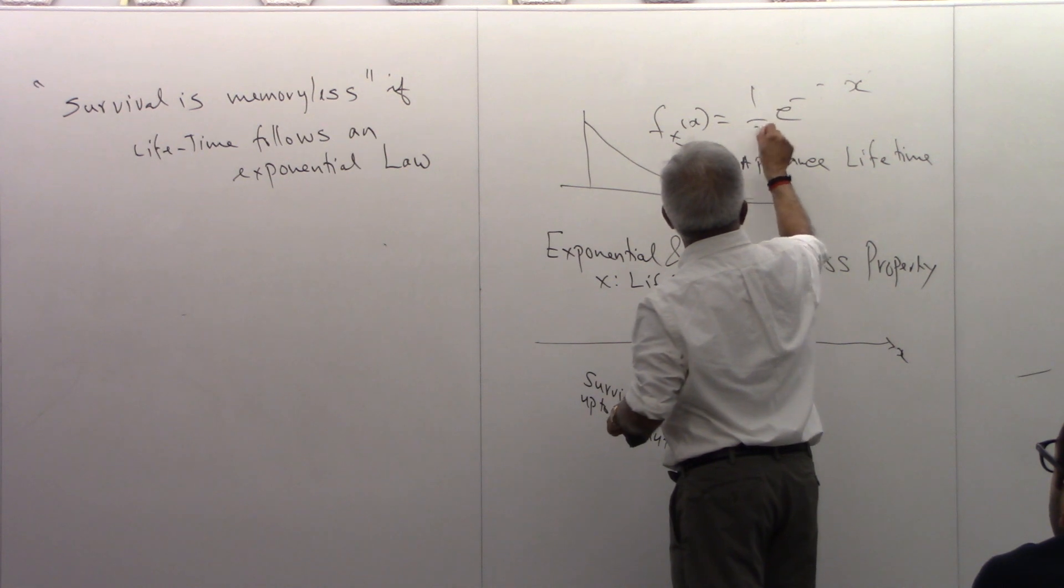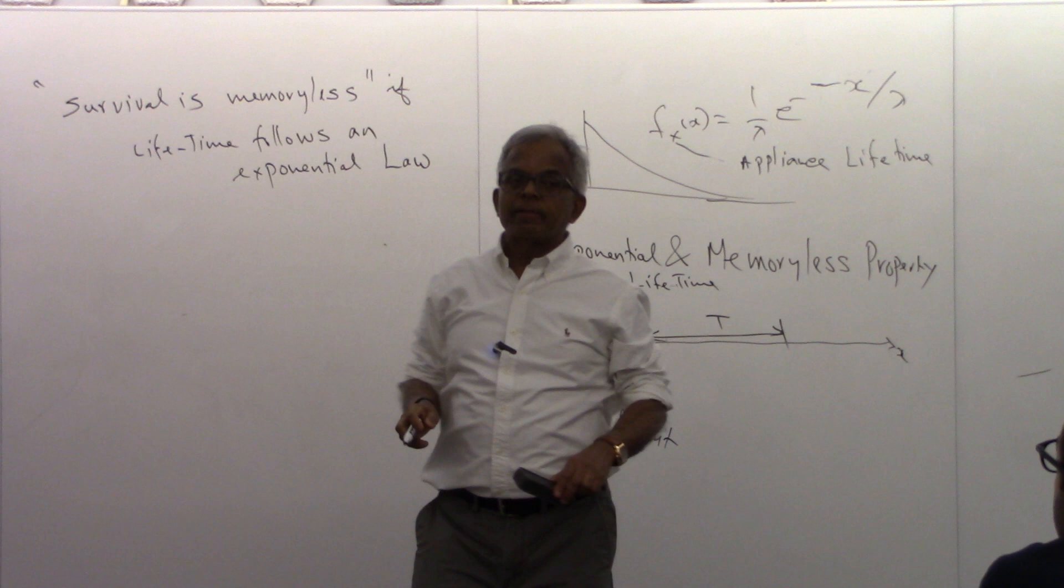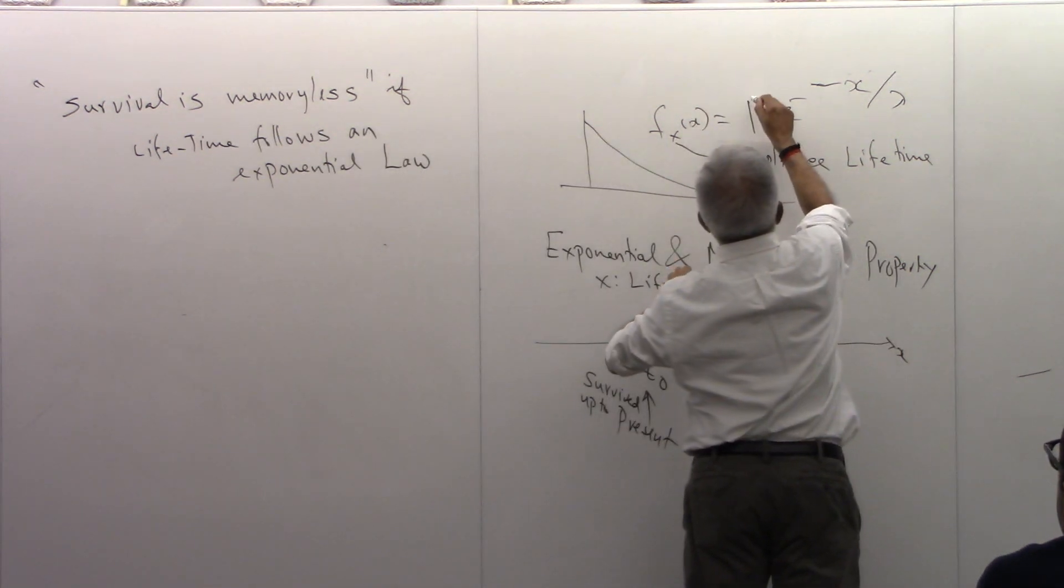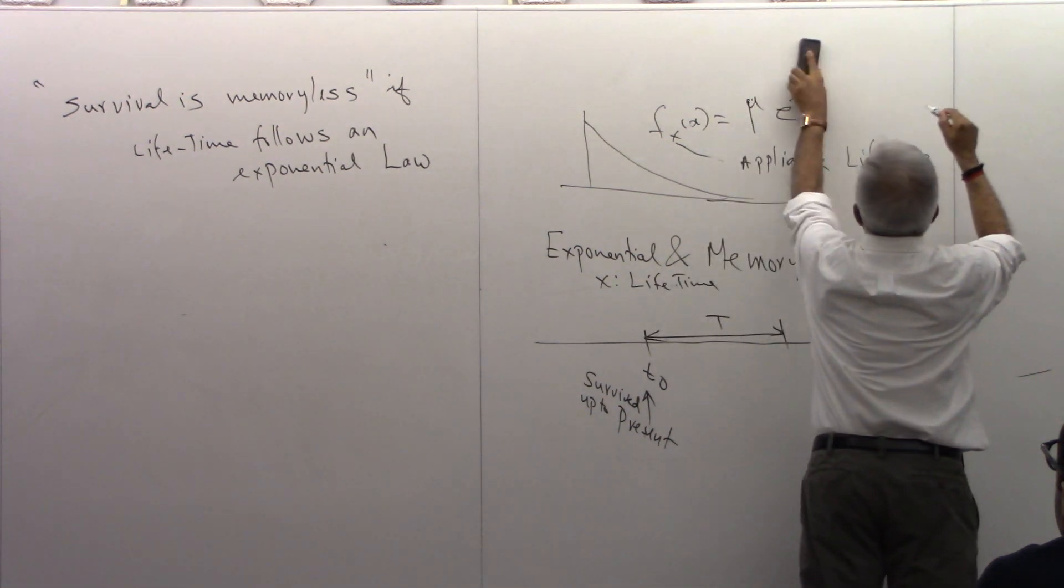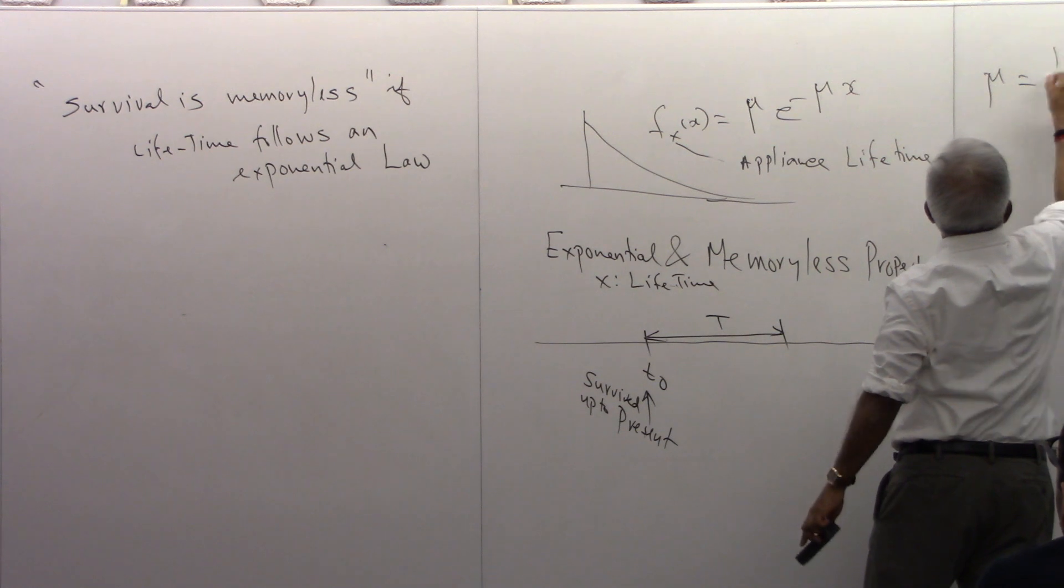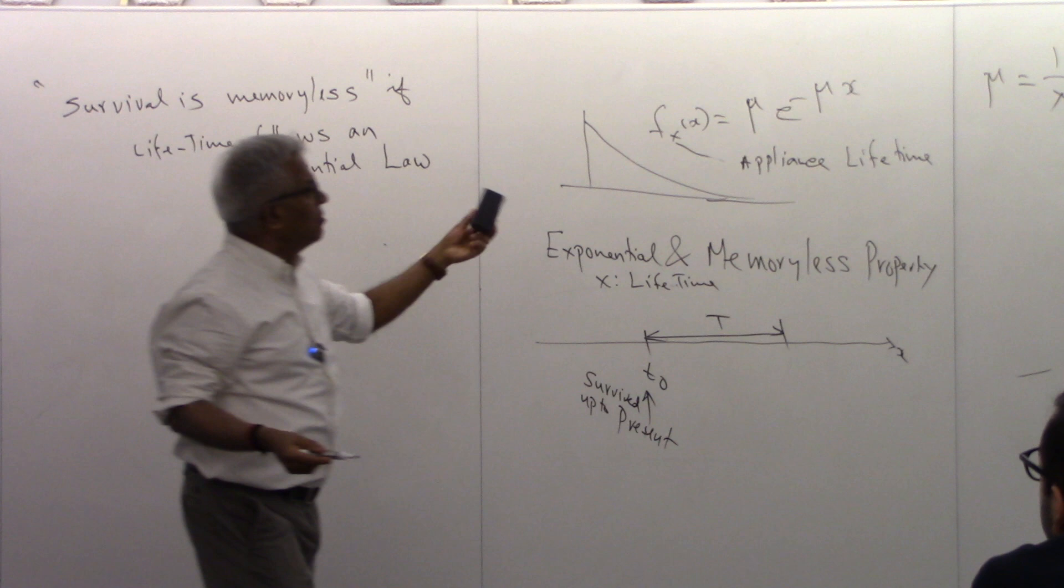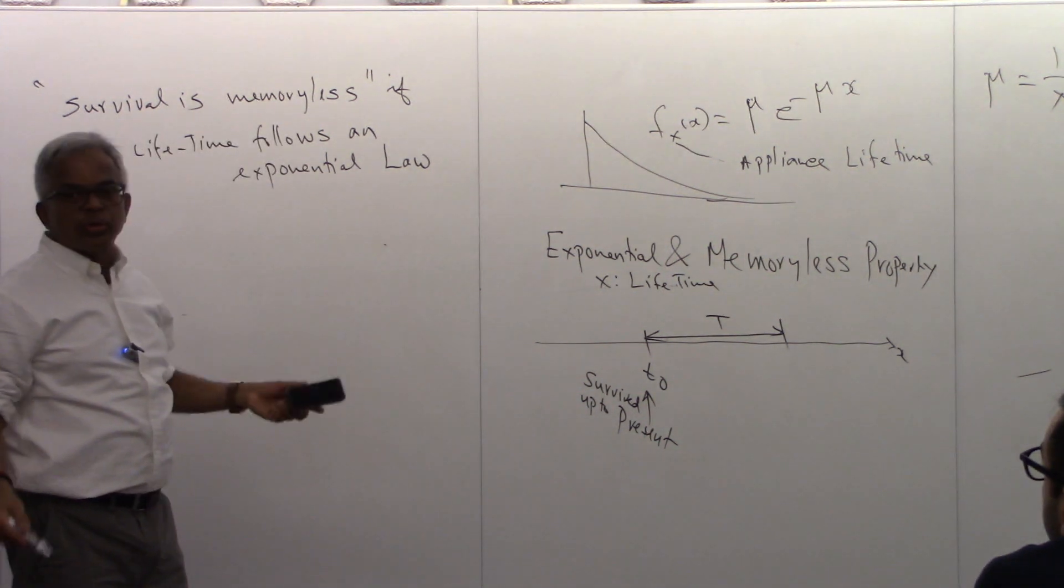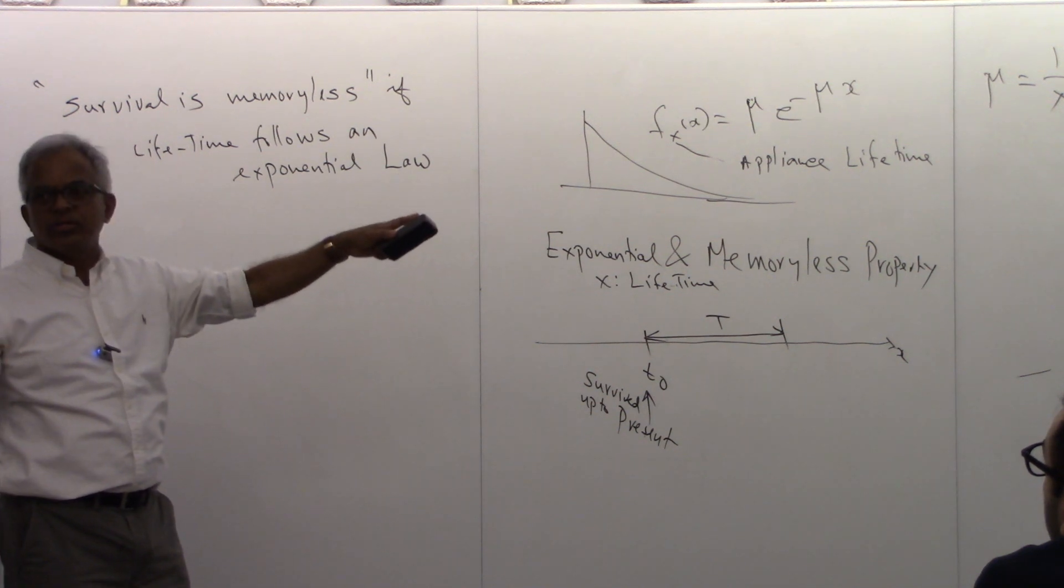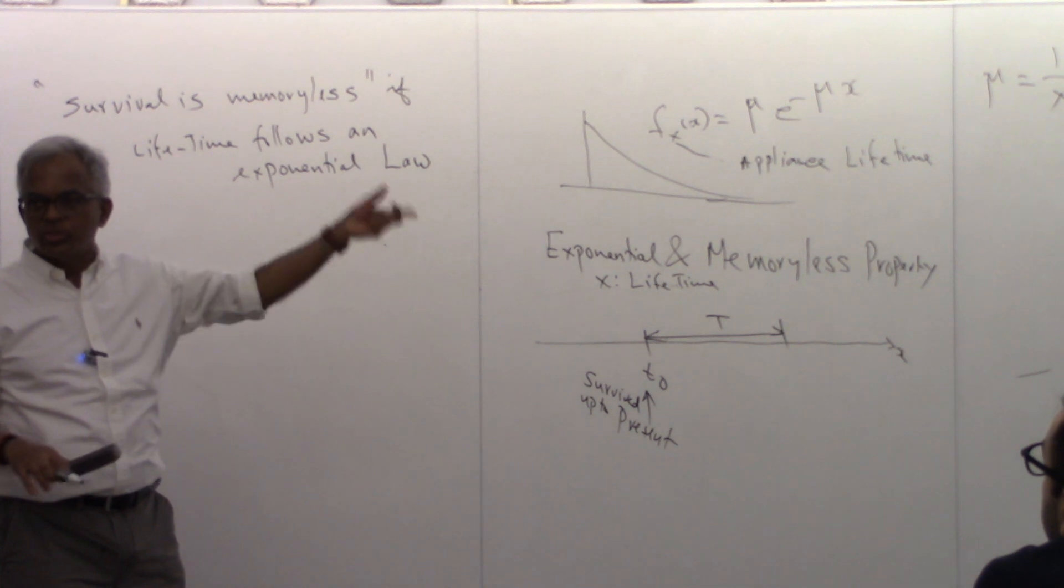Sometimes exponential people write like this. So you can also write this as lambda times e raised to minus lambda x, with the understanding that your lambda is my mu, one over mu. So either one is fine. Just make it clear which way you write. Because it's one and the same. One person is using lambda, other person is using one over lambda. Mu is one over lambda.